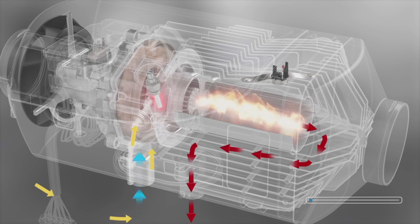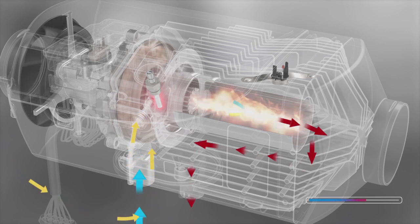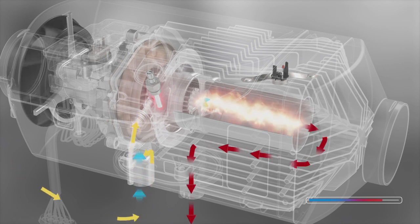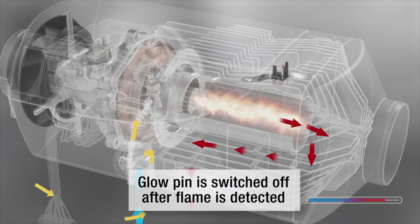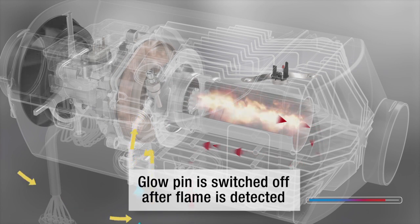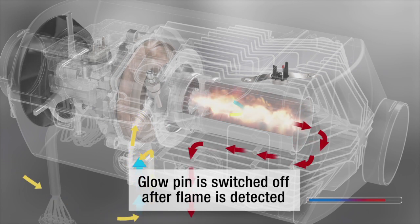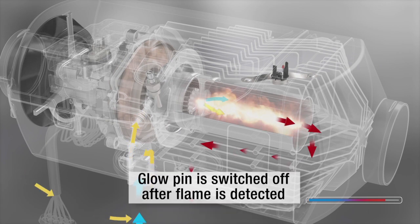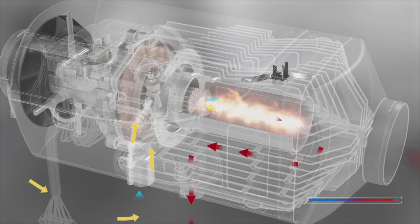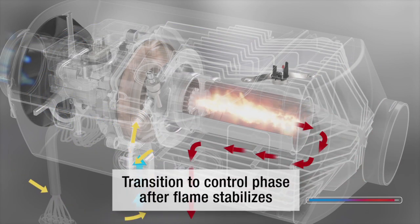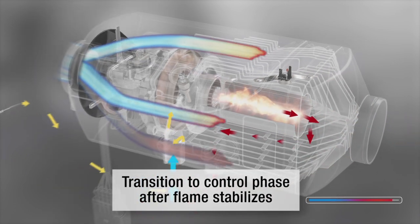The combination sensor registers the temperature on the heat exchanger. If a programmed rise in temperature is reached within a certain time, a flame is detected and the glow pin is switched off. Combustion is then powered up to the maximum level. Once the flame has stabilized, the heater switches to the control phase.